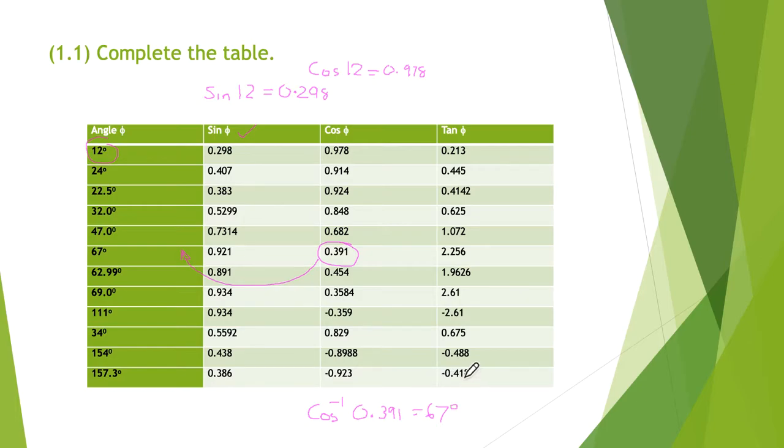One more quick example. Let's say we had the tan and we want to find out what the angle is. Again, it's just tan to the minus 1, which is the invert of tan, 0.675, and the calculator will tell you that that is 34 degrees. That's to give you a few hints on how we go about operating our calculator.